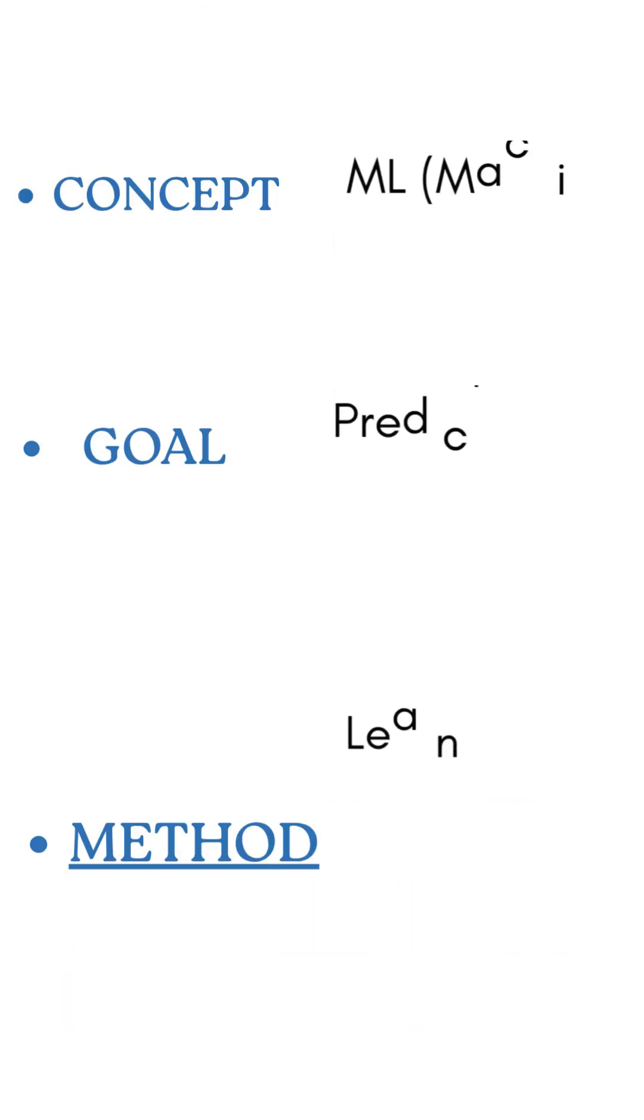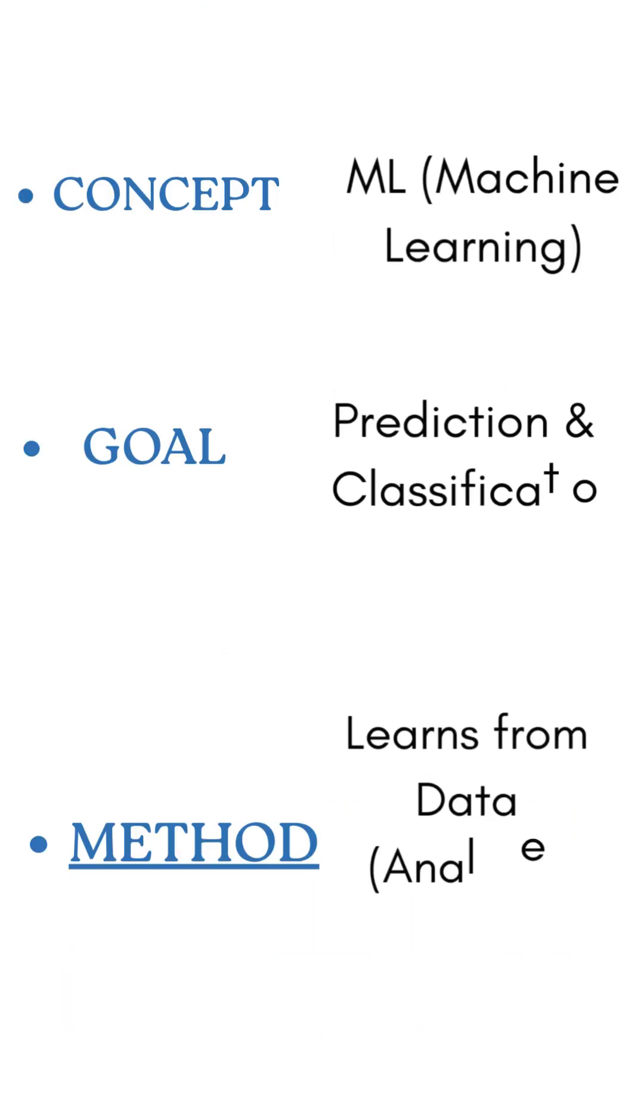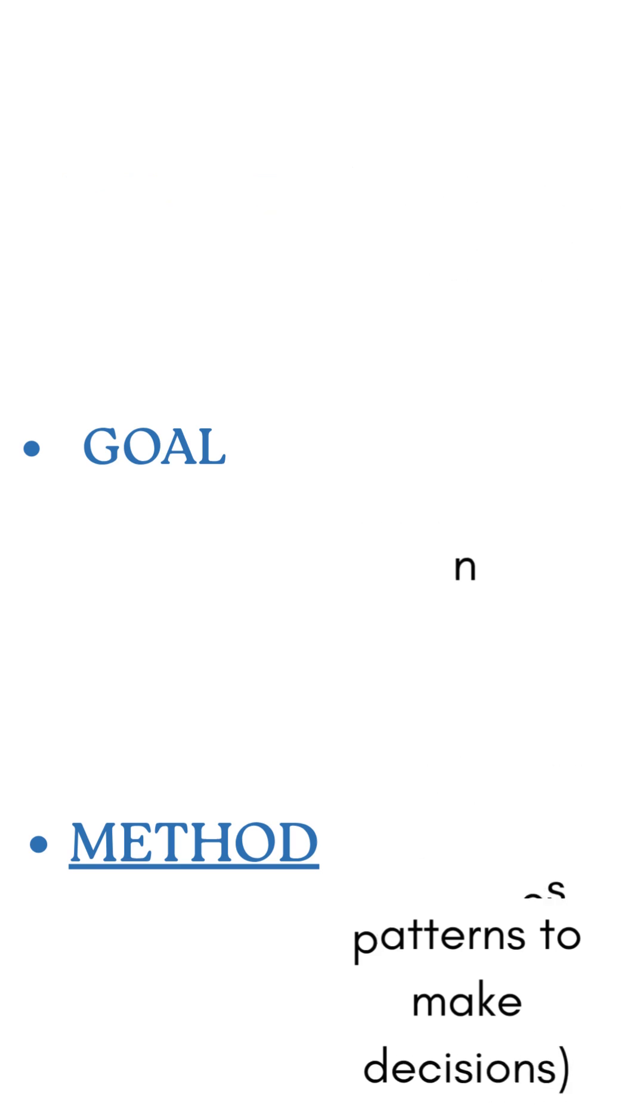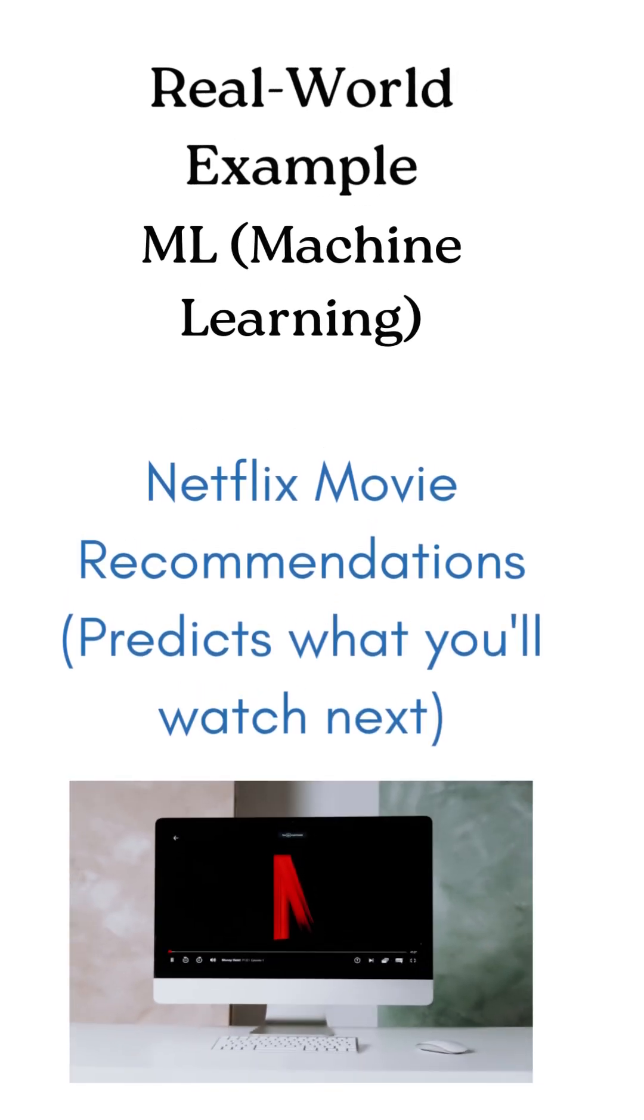And the next is Machine Learning or ML. It is a branch of artificial intelligence. It's when machines learn from the data. Instead of being told what to do, think Netflix. It learns what you like and recommends what to watch next.